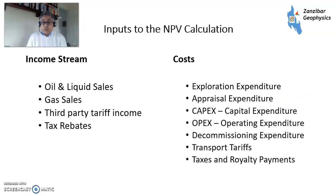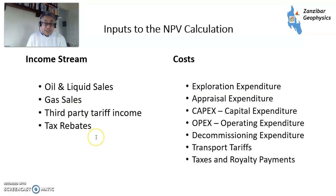So, what do we have as inputs? We've got our income stream: oil and liquid sales, gas sales, third-party tariff income if we're using a facility to host other facilities, and any tax rebates that we may have, particularly if we can offset exploration expenditure against tax.